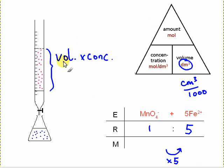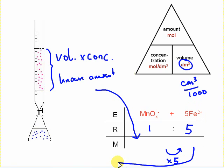From volume times concentration, that will give me a known amount, which might be that amount in there. I can multiply by five. That will give the amount of iron. And then going back to here, I will now have a volume which I know and an amount. So I can work out the concentration by doing concentration equals amount divided by volume.